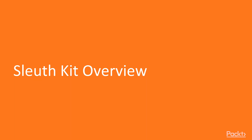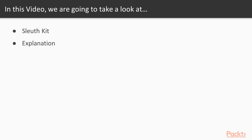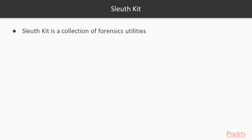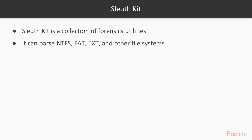Starting with the first video: Sleuth Kit Overview. In this video, we are going to look at what Sleuth Kit is and what various features are available. So, Sleuth Kit is a collection of forensics utilities — a collection of various forensics tools. It can parse NTFS, FAT, EXT, and other file systems.